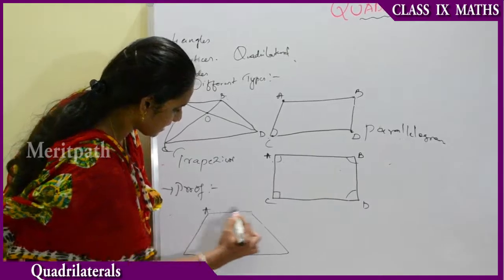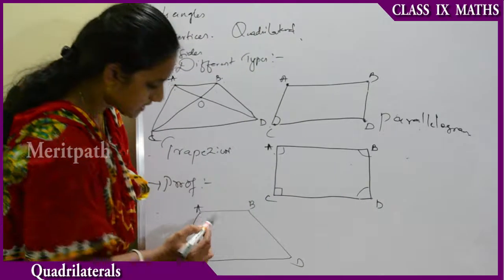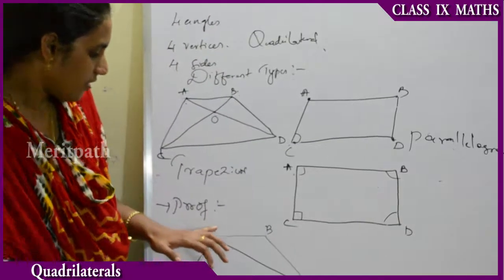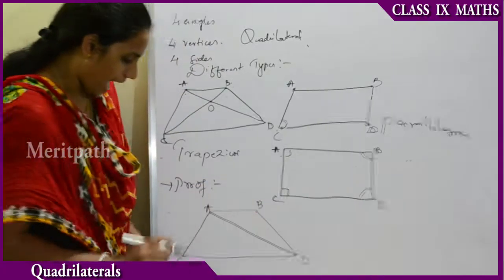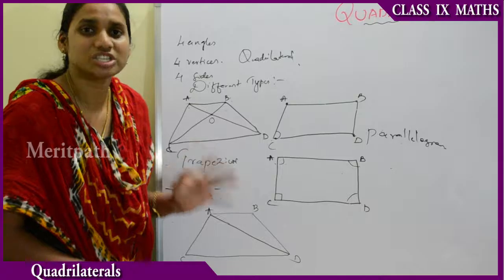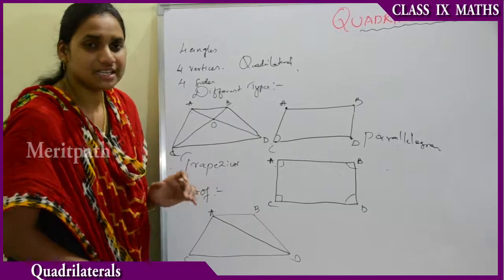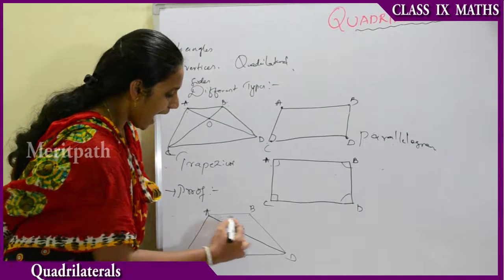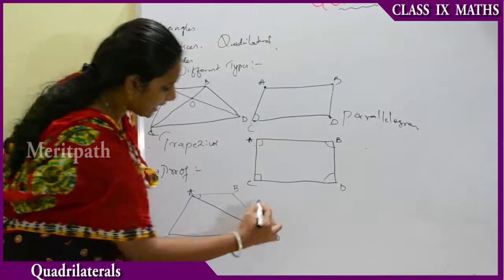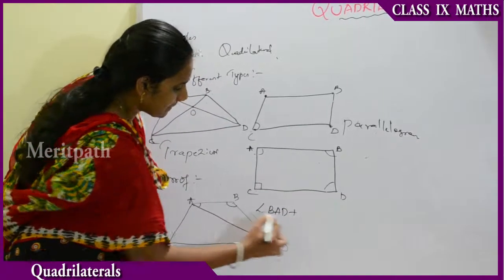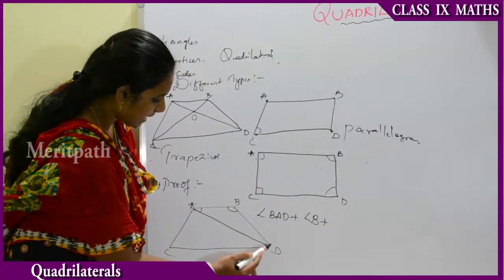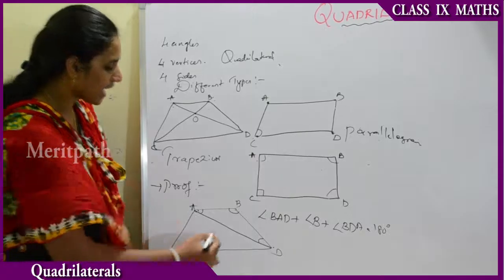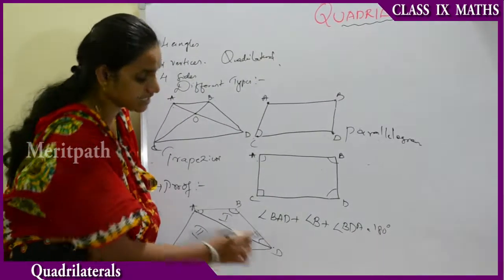Now let us see the proof that the sum of the angles in a quadrilateral is 360 degrees. We divide the quadrilateral ABCD into two equal parts using the diagonal AD. This gives us two triangles: triangle ABD and triangle ACD.